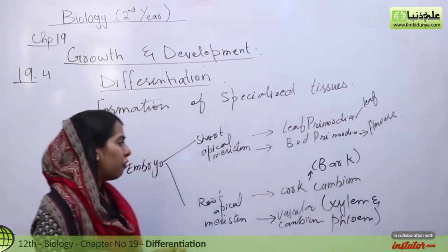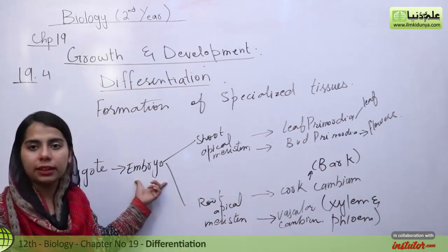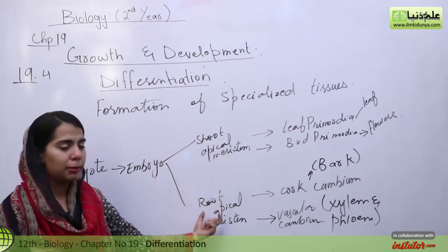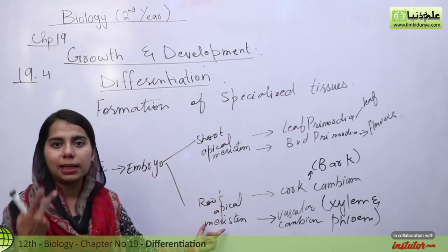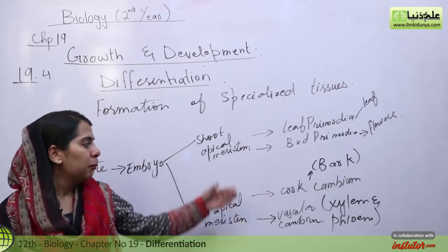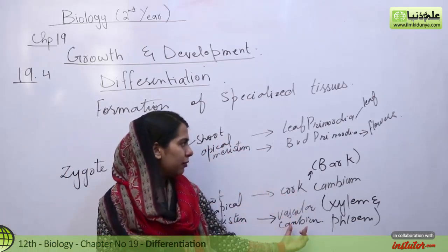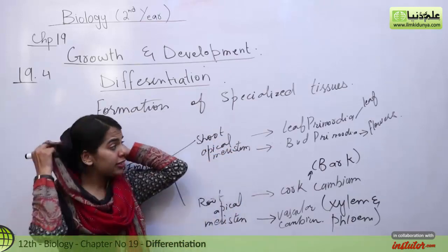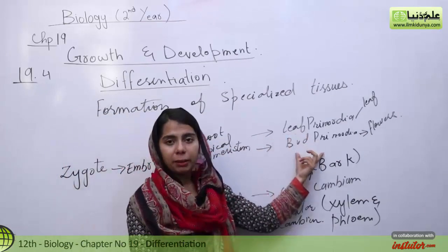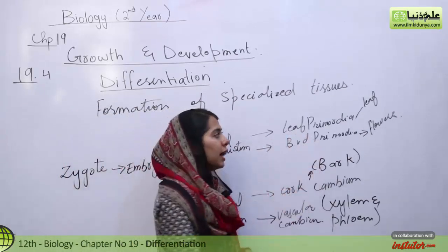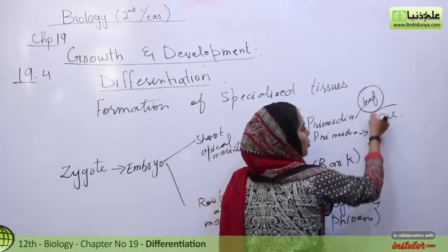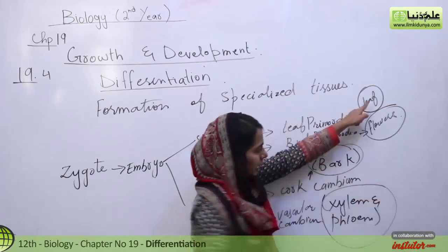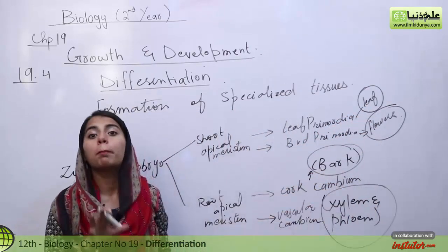So to summarize the stages: first is formation of embryo. Stage two is formation of shoot apical meristem and root apical meristem. Then formation of cork cambium and vascular cambium. In shoot apical meristem there is formation of leaf primordia and bud primordia. The last stage is the formation of specialized tissues — bark, xylem, and phloem. When these specialized tissues form, the differentiation process is complete.